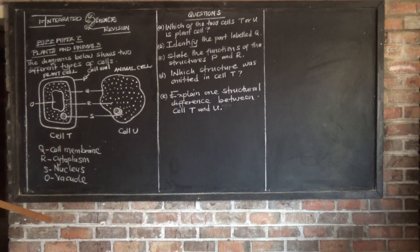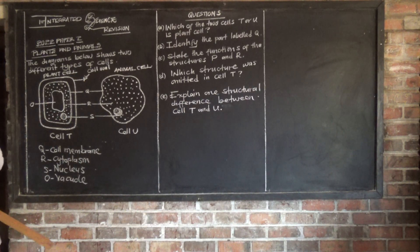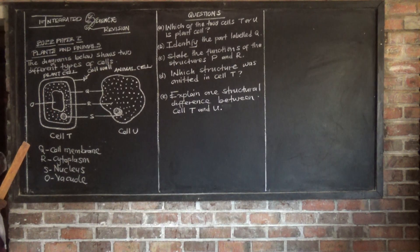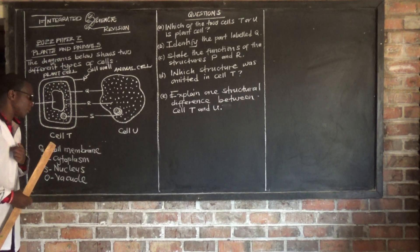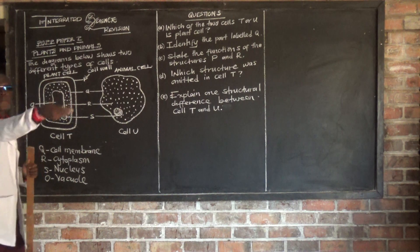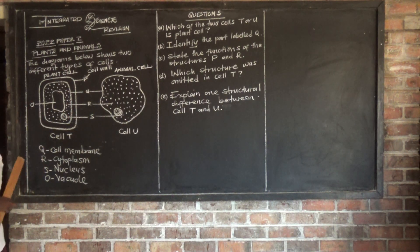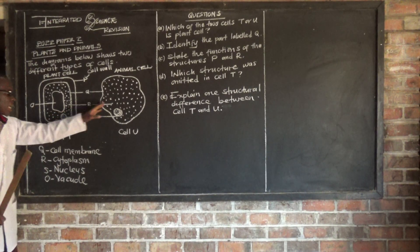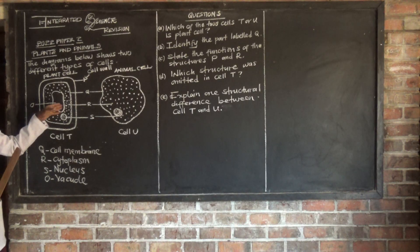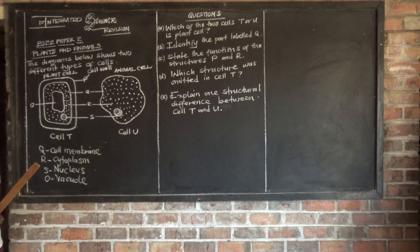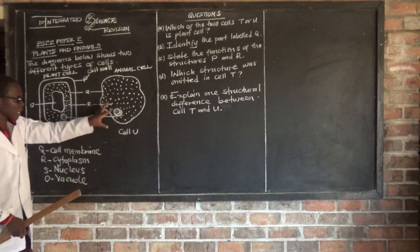For the sake of revision, let us go through the functions of these parts. The function of the cell wall is to protect the inner parts of the cell. Then Q, the cell membrane — the function of the cell membrane is to allow some solutions to get in and out of the cell, because this part is selectively permeable. Then cytoplasm, which is R — this is a site where all cell activities take place. Then we have S, which is our nucleus. The function of the nucleus is to control all cell activities.